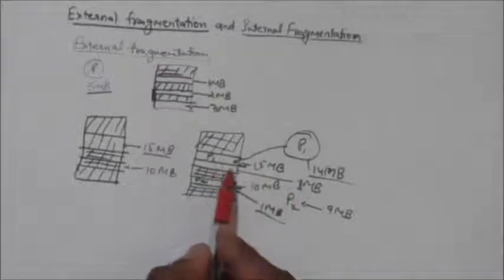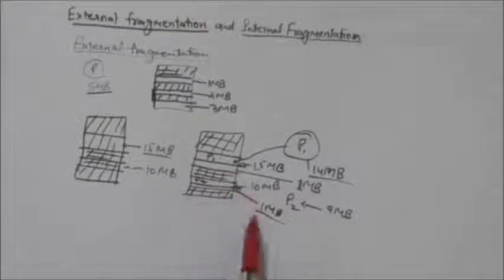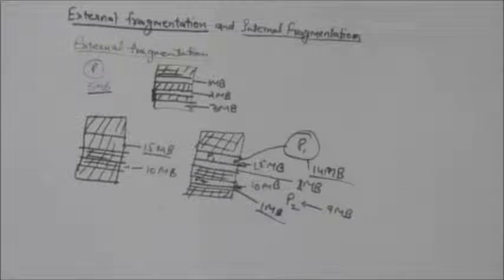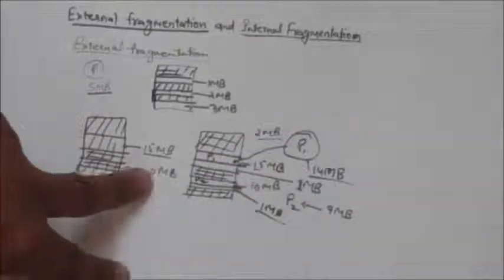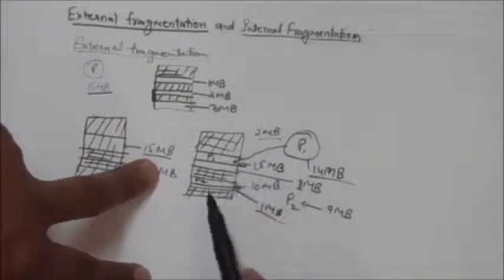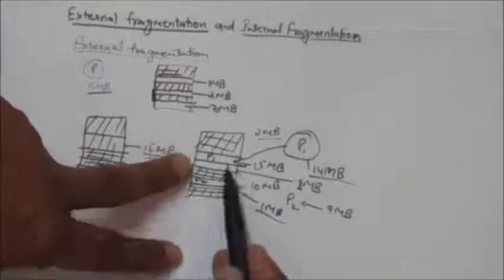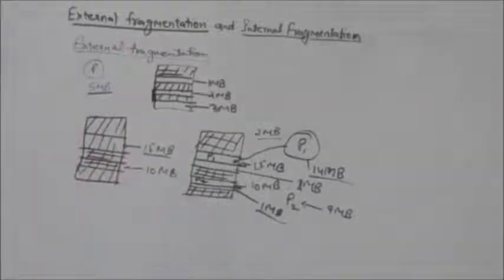When small holes are scattered, memory is wasted. For example, if there is a process requiring only 2 MB of memory for execution, the memory cannot satisfy its requirement — even though 2 MB of free memory is available, it is scattered across two 1 MB holes. Such conditions are called external fragmentation.